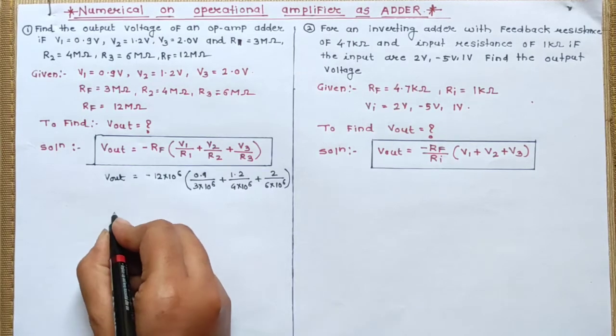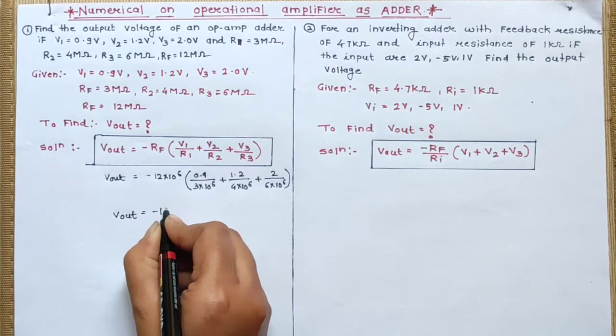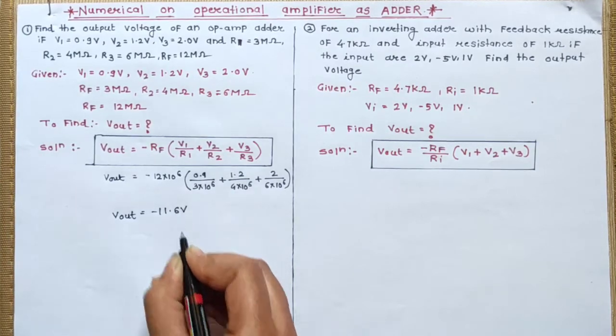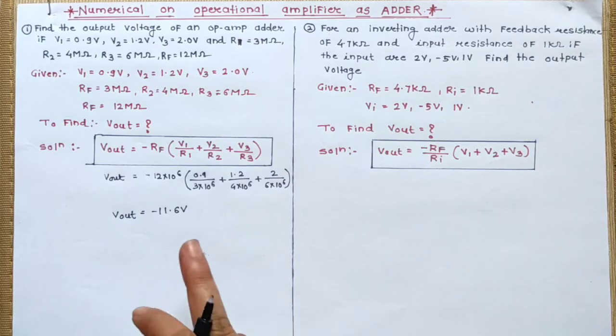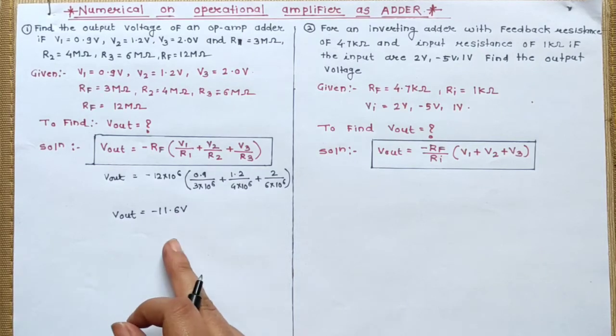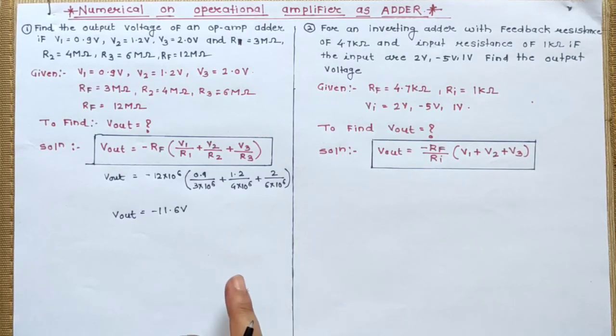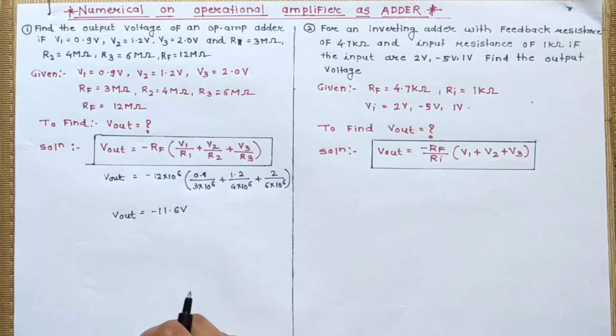So after performing this calculation, Vout comes out to be minus 11.6 volt. This minus sign indicates the input and output is 180 degree phase shift. So here you have to write down the output voltage. So here I have to tell you directly, but you have to solve in detail. So here output voltage is minus 11.6 volt.